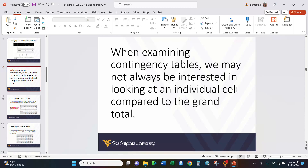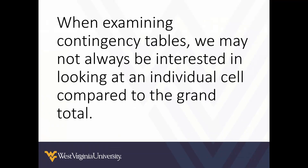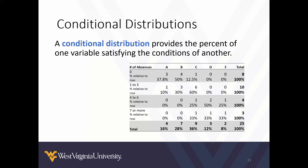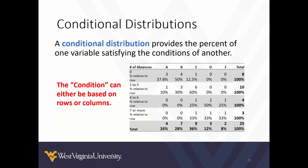Moving on to contingency tables. When examining contingency tables, we may not always be interested in looking at an individual cell and comparing it to the grand total. Sometimes we want to compare it to one of the marginal distributions. A conditional distribution provides the percent of one variable satisfying the conditions of another. This condition can be based on either our rows or our columns.